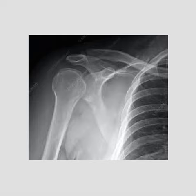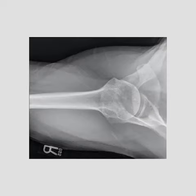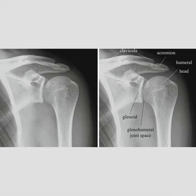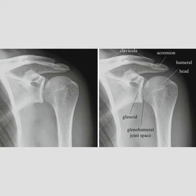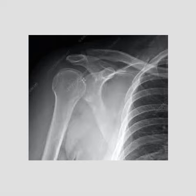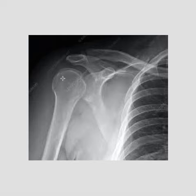Now I want to show you an issue with AP views, because you can be really fooled. This is a posterior dislocation, and it has a couple of classic signs. The most important thing to recognize is that the proximal humerus looks symmetrical. When I talked about the shape of the proximal humerus earlier — the humerus is not supposed to be symmetrical. You're supposed to see the greater tuberosity out laterally. But if you look at this picture, it doesn't really look very asymmetrical. These are very frequently missed, especially on an AP view where you don't have a Grashey view and don't see the incongruence in the joint. This may look quite normal and is often read as normal.